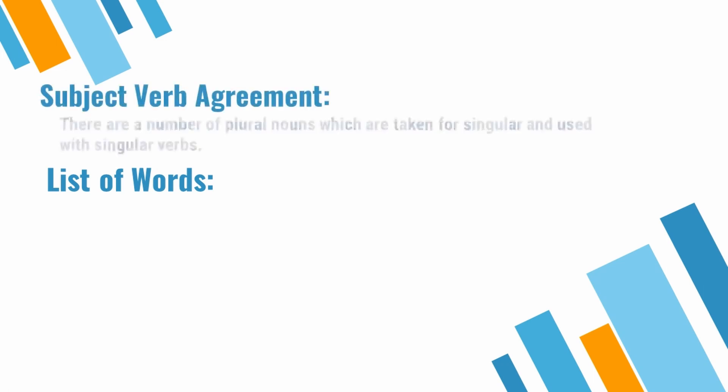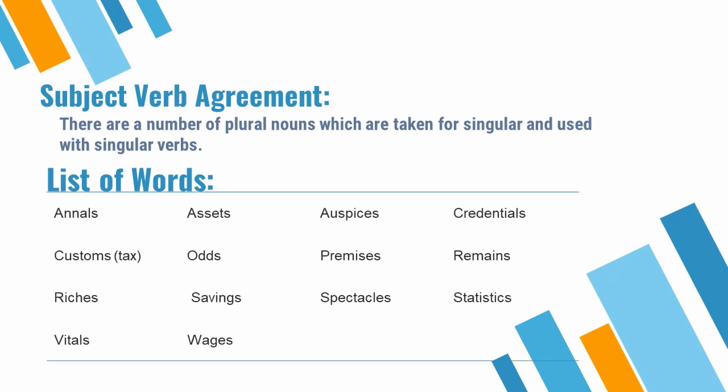Isi rule ki hamare paas ek extension hai: there are a number of plural nouns which are taken for singulars and used with singular verbs. We also have an extension — plural nouns that are commonly misused as singulars. Such as articles of dress that have two inseparable parts: braces, breeches, pants, pajamas, shorts, trousers, knickers. Also tools like compasses, pincers, scissors, tongs, forceps.